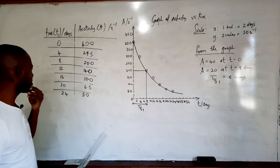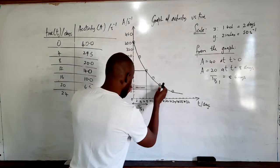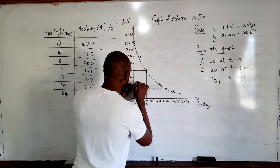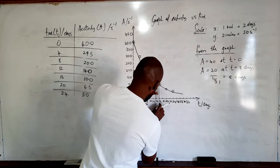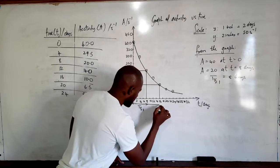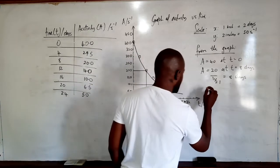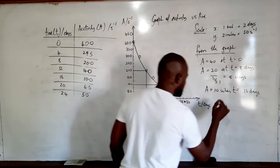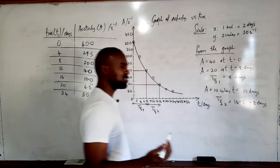We need at least one more half-life, so we find half of 20, which is 10. We locate 10 on the y-axis, draw a line across to the curve, and drop a vertical to the x-axis — that corresponds to a time of 16 days. At A equals 10, t equals 16 days. Therefore, T½₂ equals 16 minus 8, which equals 8 days.